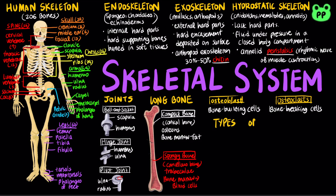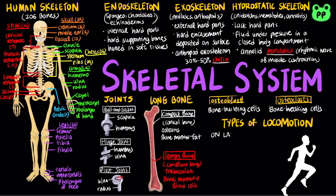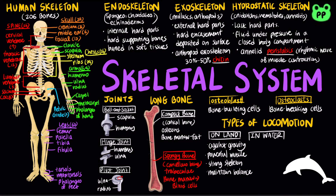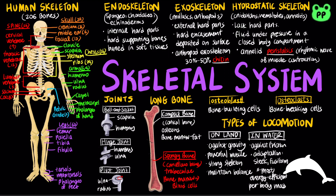Most animals are capable of locomotion, which means active travel from place to place. Walking, running, hopping, or crawling on land requires an animal to support itself and move against gravity. It requires powerful muscles, a strong skeleton, and adaptations to maintain balance. In water, friction is a bigger problem than gravity. Fast swimmers usually have a sleek fusiform shape to minimize friction. Swimming is the most energy-efficient locomotion per body mass.